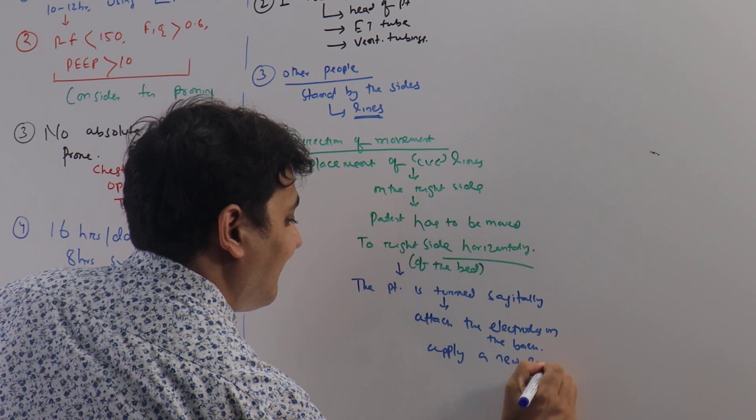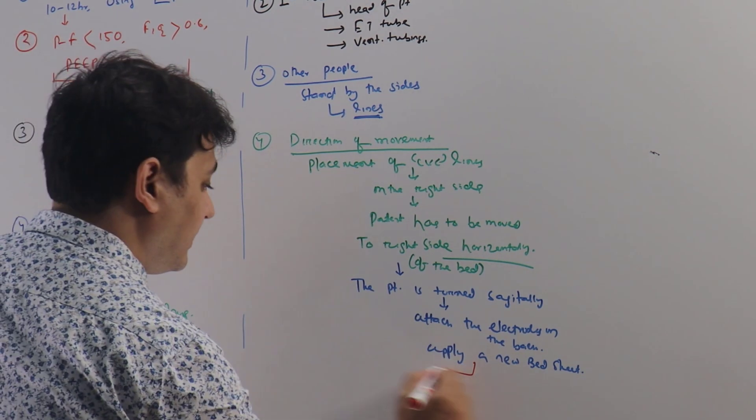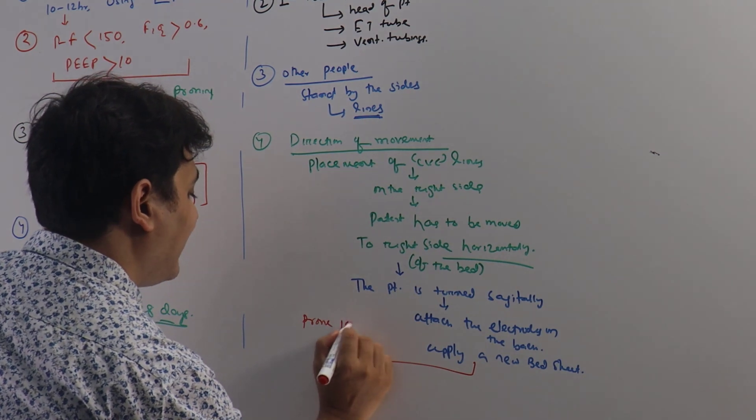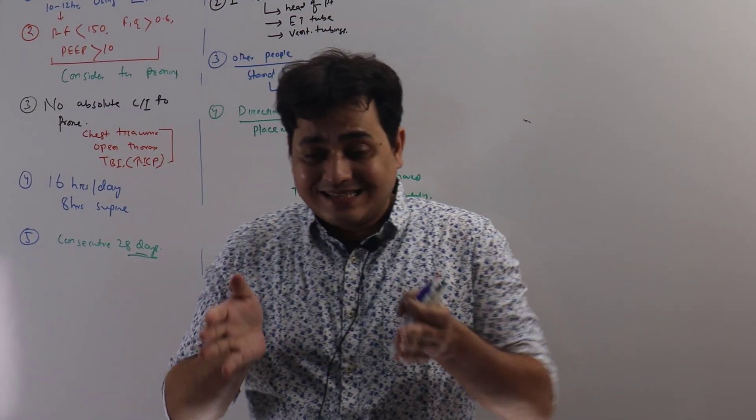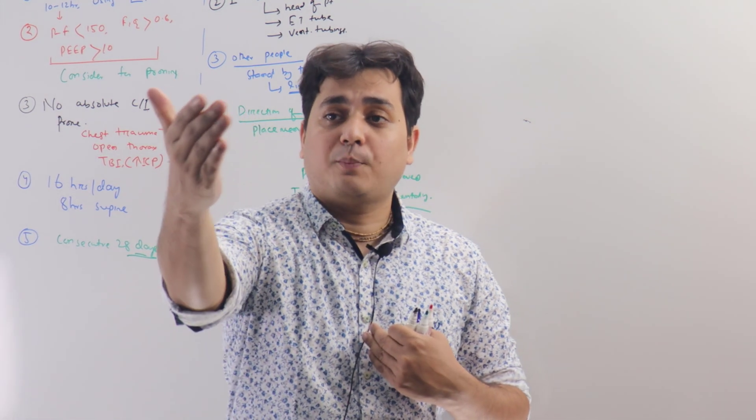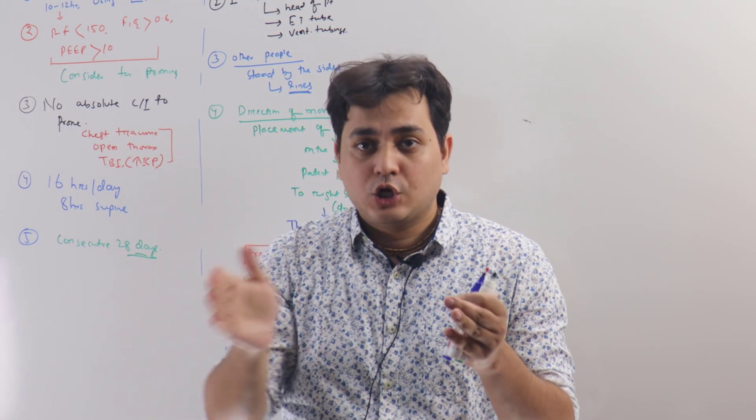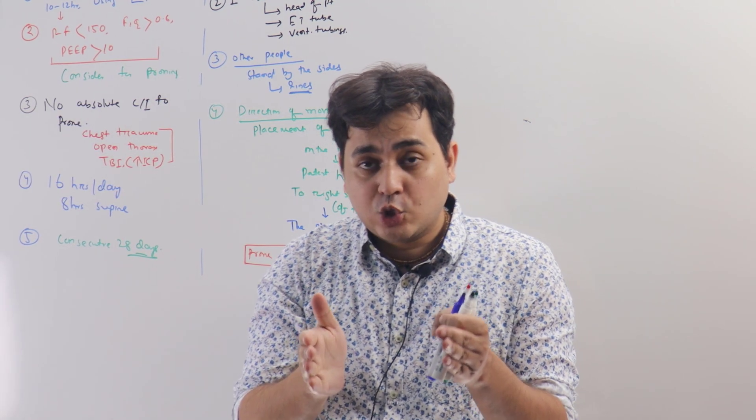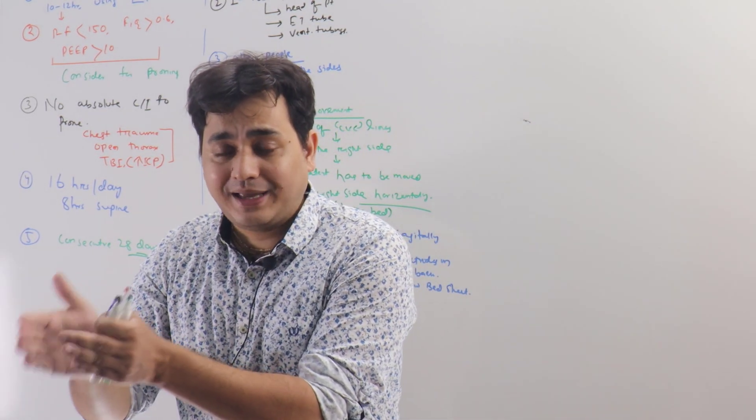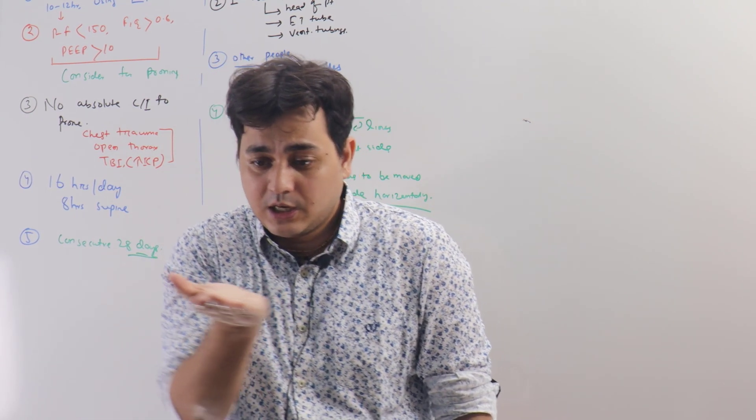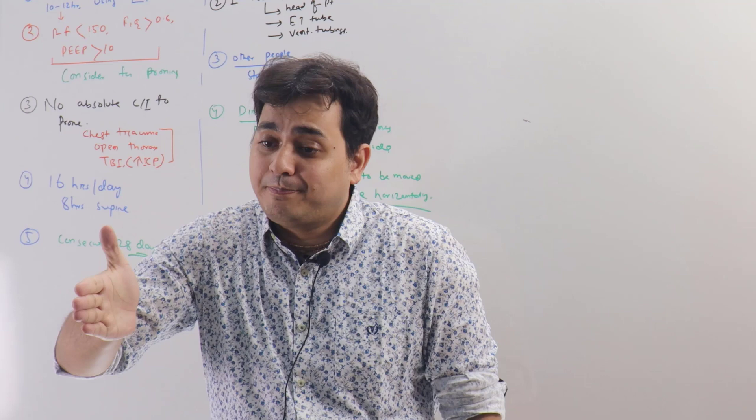Lastly, when it is done, prone 180 degrees. Let me explain this in detail. The patient is lying on the bed, head this side, legs on the opposite side. Let's imagine the central venous catheter is on the right femoral, so it is on the right side. What we will do: we will move the patient in the bed towards the right edge horizontally. Once it is on the right side of the edge, then we will turn the patient in a sagittal direction like this.